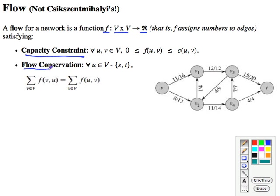Flow conservation says for all vertices except for the source and the sink, the flow coming from other vertices into u must equal the flow coming out of u to other vertices. In other words, the flow into a vertex must equal flow out of it except for the source and the sink.